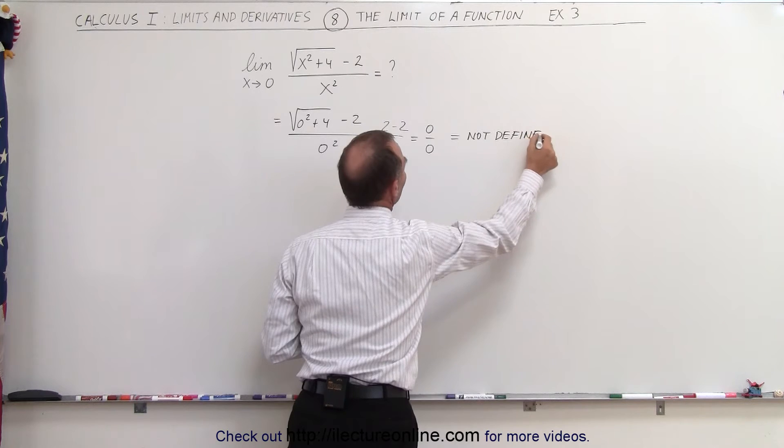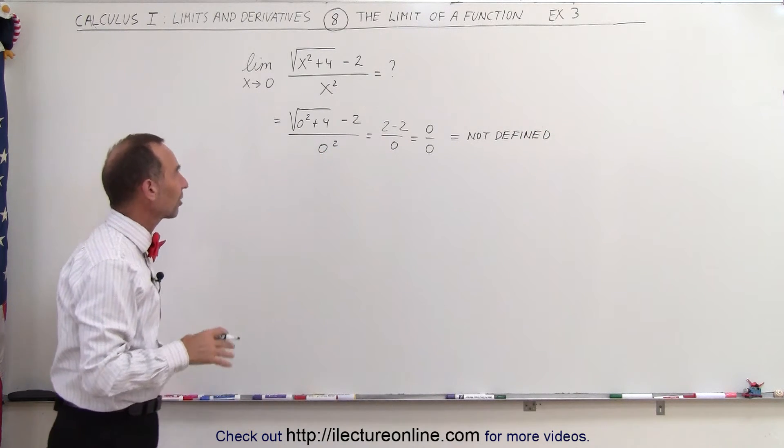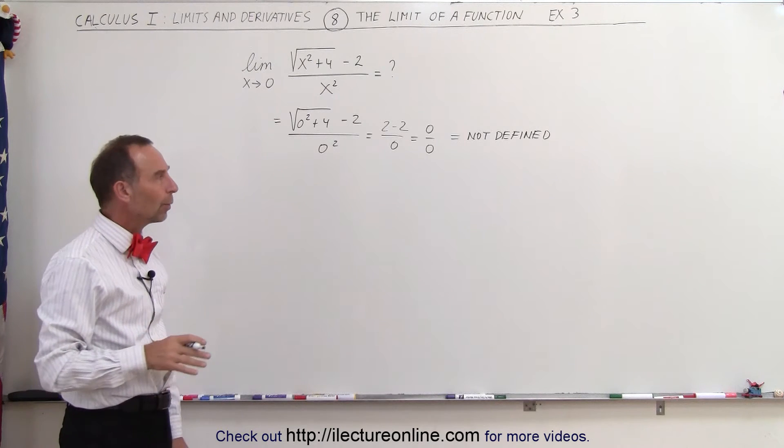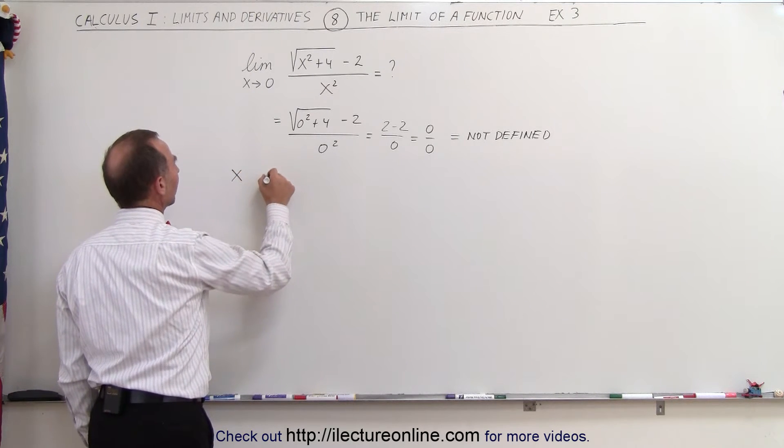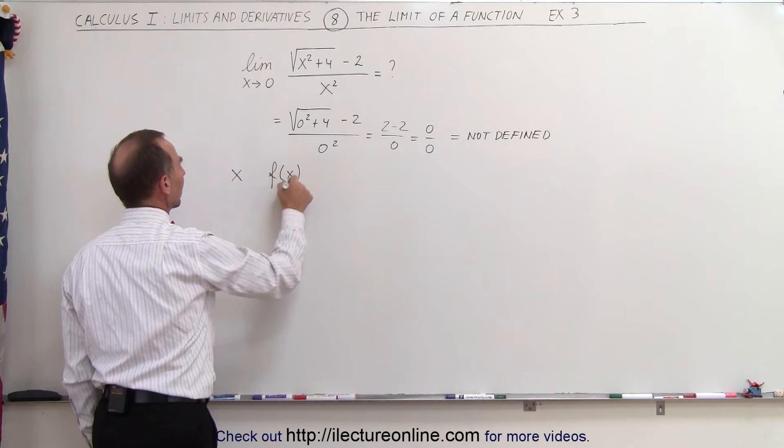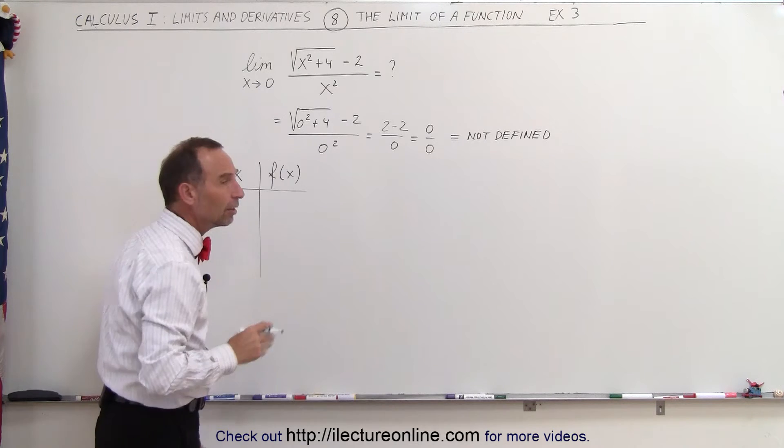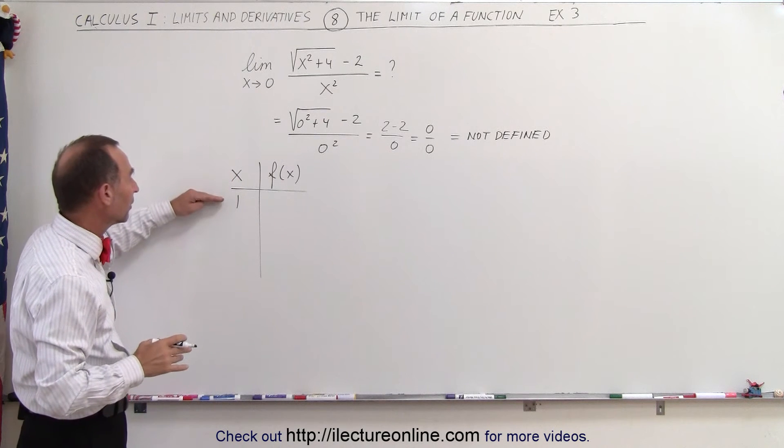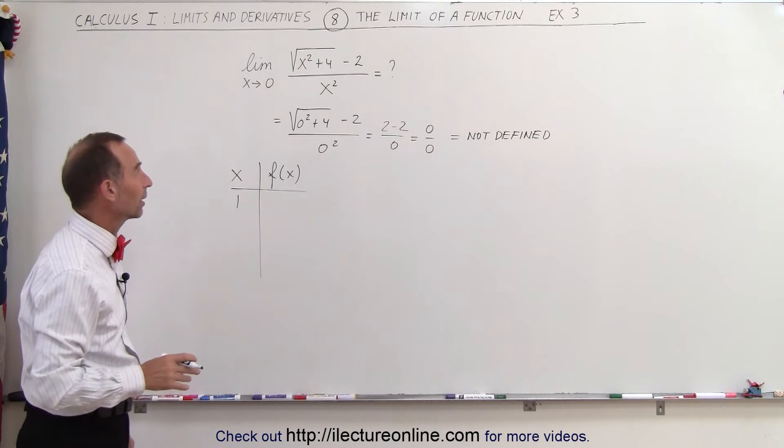So again, at first sight it appears that this particular function, we cannot find the limit of that as x approaches 0. However, what if we set up a table of values? So let's plug in some values for x and see what the corresponding values are of the actual function. And start out with a number, let's say x equals 1, and slowly we're going to let the value for x approach 0 to see what the value for the function becomes.